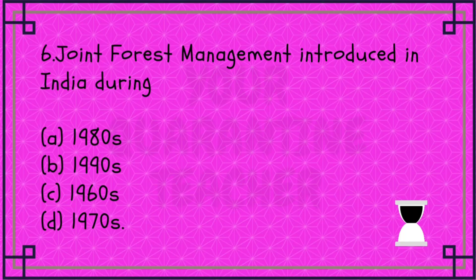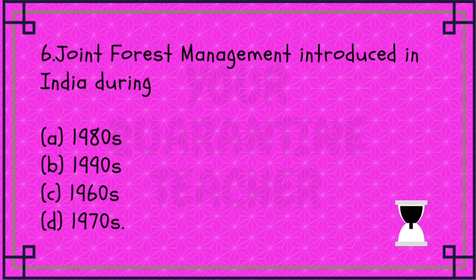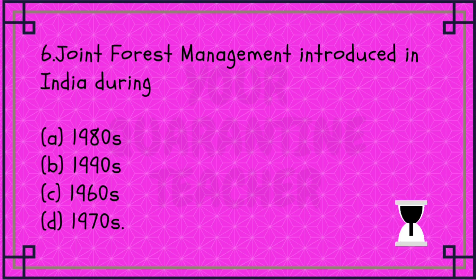Next question: Joint Forest Management introduced in India during — Option A 1980s, Option B 1990s, Option C 1960, Option D 1970. The direct question answer is Option A, 1980s.